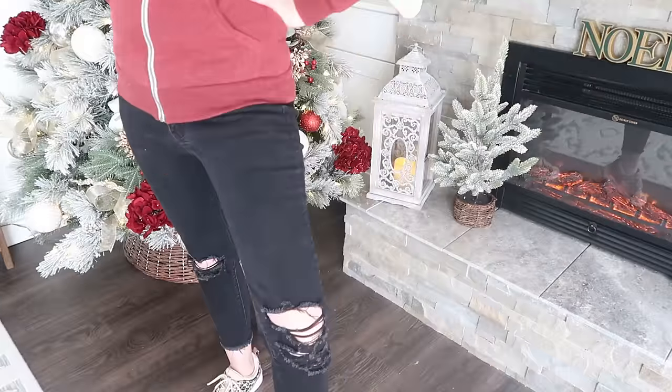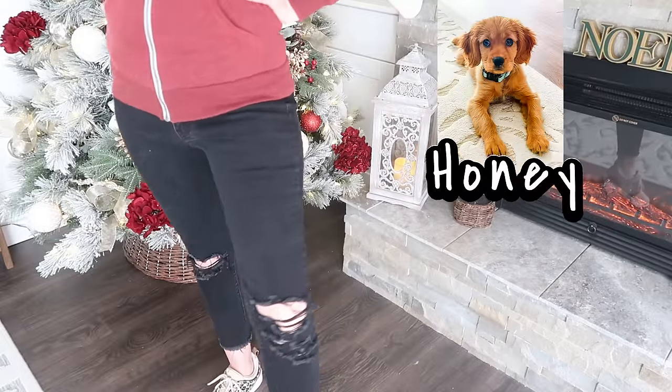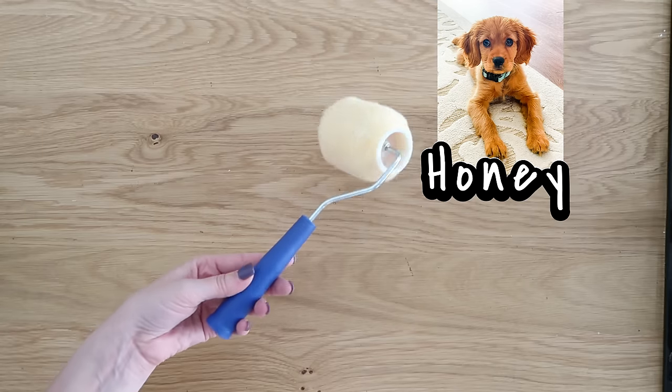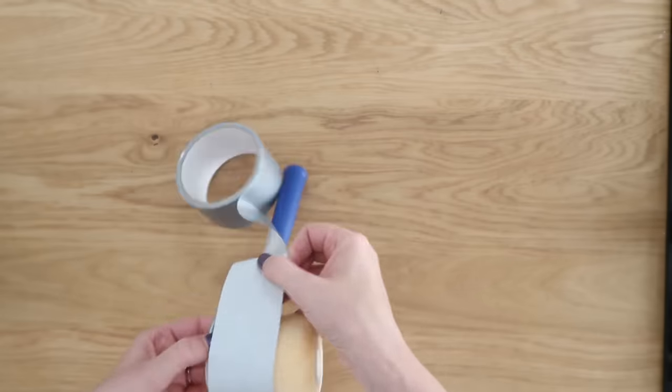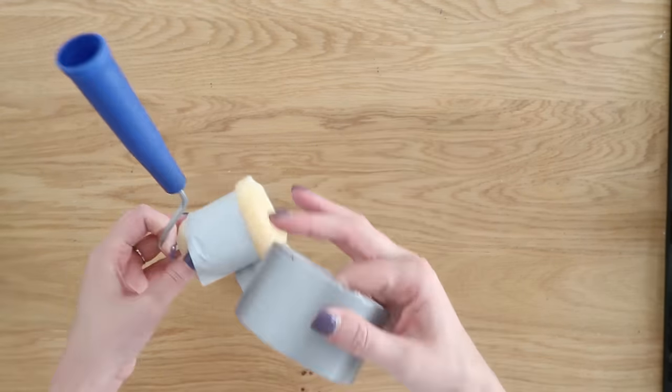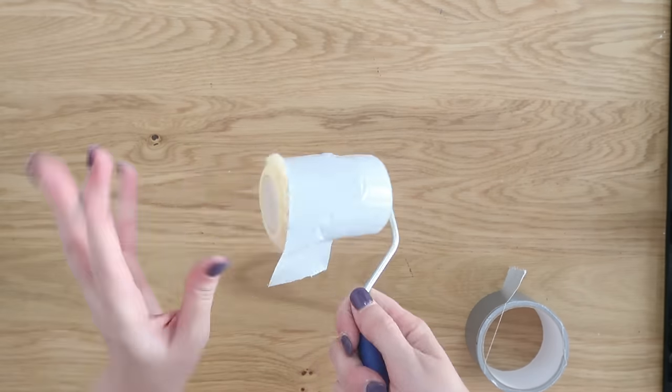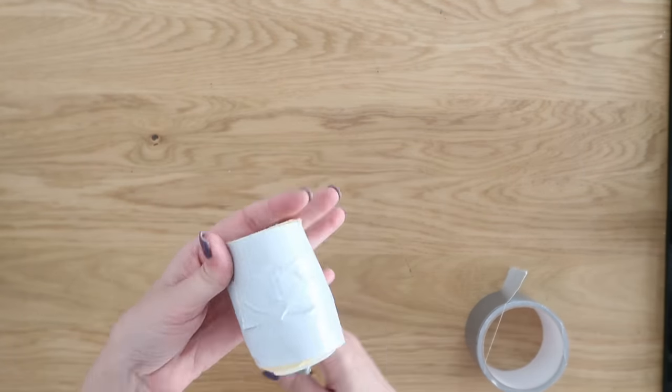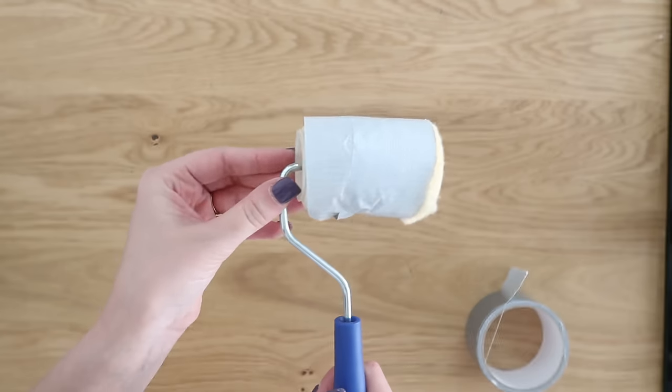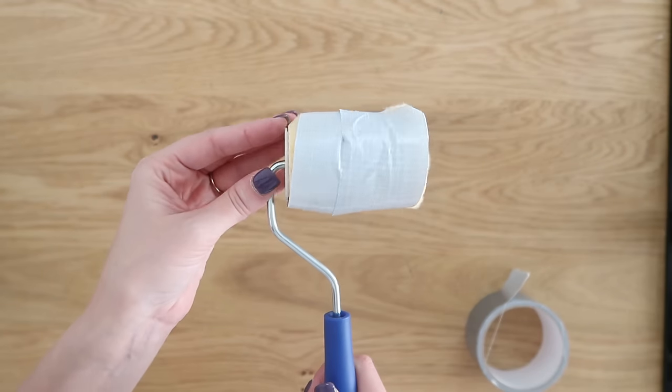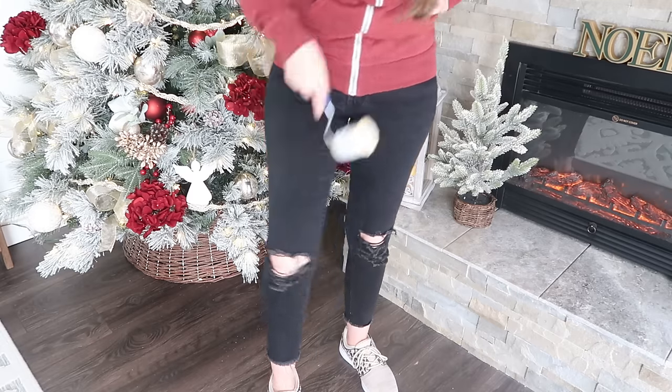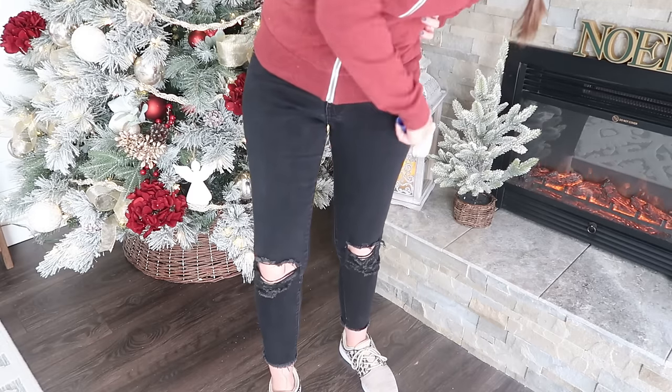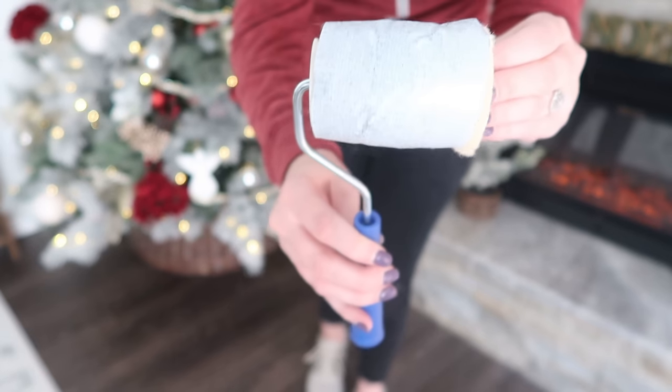Is pet hair a problem for you like it is for us? We recently got a new puppy so we have dog hair galore. If you're in a pinch, this is a great hack. Grab one of these paint rollers from Dollar Tree and put some duct tape on there backwards so the sticky side is sticking up and you have an instant lint roller. Honestly, these do work a lot better as the duct tape is much more sticky than the actual lint roller.